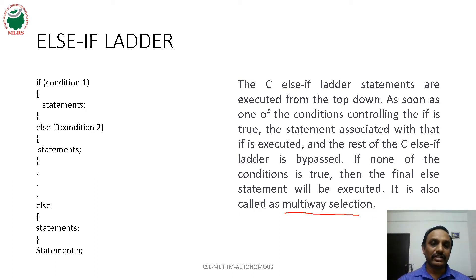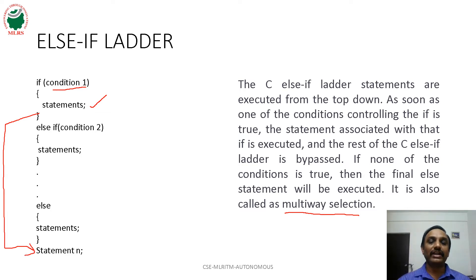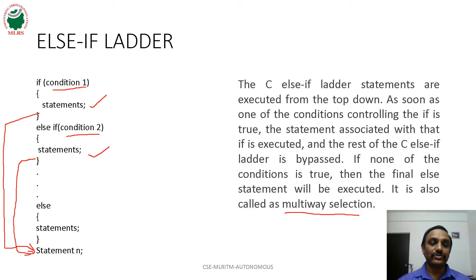Here, first condition 1 is verified. If condition 1 is true, the statements present in the corresponding block are executed. After executing those statements, control goes to statement n. If condition 1 is false, then condition 2 is verified. If condition 2 is true, then the statements in that block are executed, and after executing all those statements, control directly goes to statement n without checking remaining conditions. If all the conditions are false, then the else block statements are executed, then control goes to statement n.